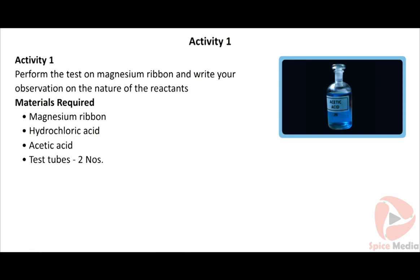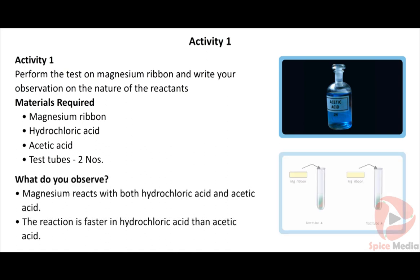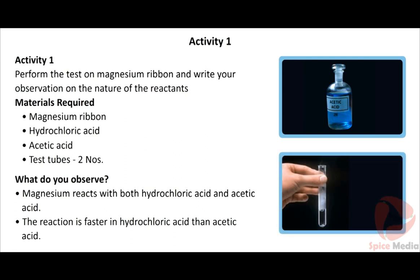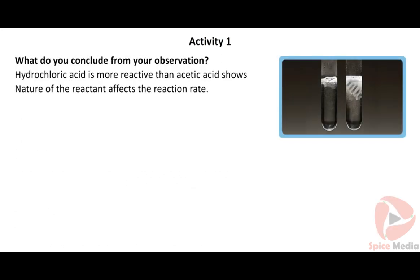Procedure: Take magnesium ribbon in two test tubes. Add hydrochloric acid to test tube A and acetic acid to test tube B. Observe the changes in both test tubes. It is seen that magnesium reacts with both hydrochloric acid and acetic acid, but the reaction is faster in hydrochloric acid. Conclusion: Hydrochloric acid is more reactive than acetic acid, showing that the nature of the reactant affects the reaction rate.